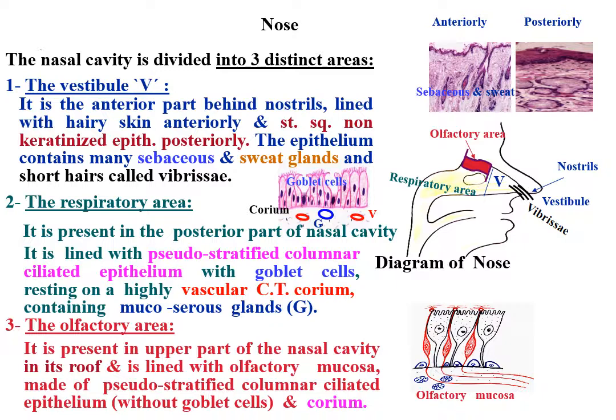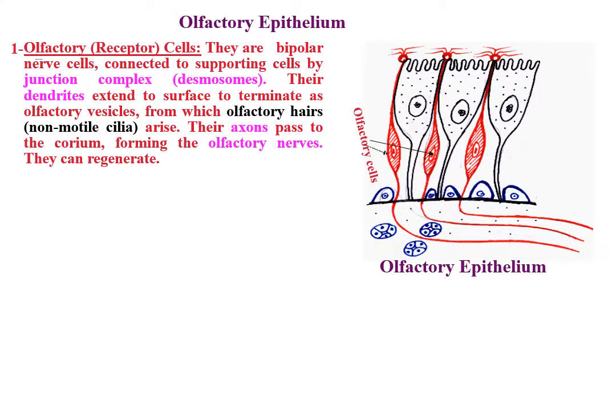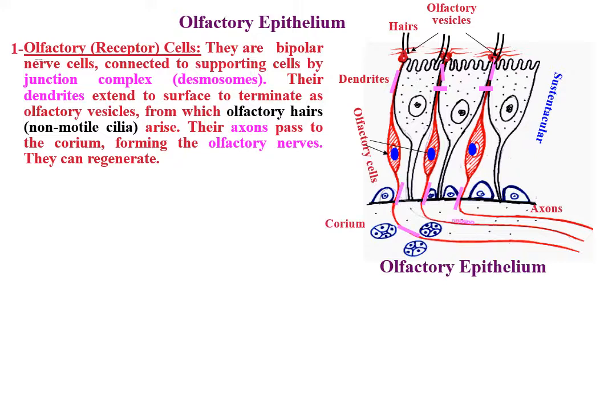The olfactory epithelium, like any other sensory epithelium, is formed of nerve cells or receptor cells, supporting cells, and renewal cells which are basal cells. Olfactory receptor cells are bipolar nerve cells connected to supporting cells by junctional complexes and desmosomes. Their dendrites extend to the surface to terminate as olfactory vesicles, from which olfactory hairs (non-motile cilia) arise. The axons pass to the corium forming the olfactory nerves. They can regenerate.